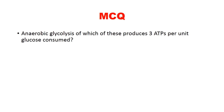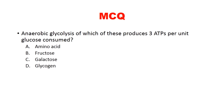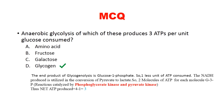MCQ 4: Anaerobic glycolysis of which substrate produces 3 ATPs per unit consumed? Options: amino acid, fructose, galactose, glycogen. The answer is glycogen. Because glycogen breakdown yields glucose-1-phosphate, the first ATP-consuming step (glucose to glucose-6-phosphate) is bypassed. So net ATP production is one unit higher than usual, giving 3 ATPs in anaerobic glycolysis.